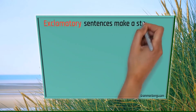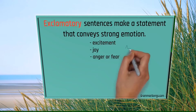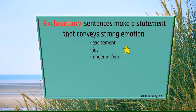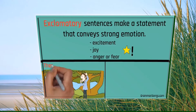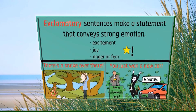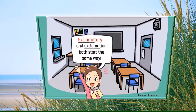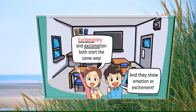Exclamatory sentences make a statement that conveys strong emotion like excitement, joy, anger, or fear. A big clue is that exclamatory sentences always end with an exclamation mark. For example, 'There's a snake over there' shows fear, and 'You just won a new car' shows excitement. Exclamatory and exclamation both start the same way and they both show emotion or excitement.